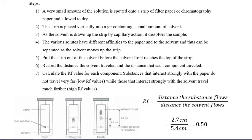When performing a chromatography experiment, get a very small amount of the solution you're trying to separate and spot it on a strip of filter or chromatography paper, then allow it to dry. Our test solution is just one small dot a few centimeters above the end of the paper. Then the strip is vertically placed into a jar containing a small amount of solvent. Make sure the solvent line is below the dot — you want the solvent to travel up, hit the dot, and then separate. As the solvent is drawn up by capillary action, it dissolves the sample, and the various solutes' different affinities for the paper and solvent cause them to separate.